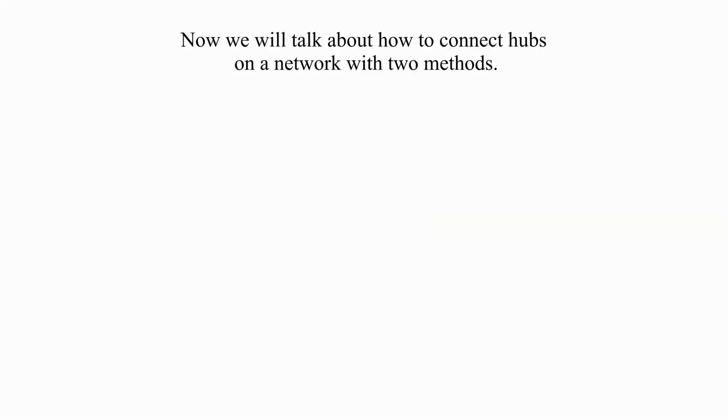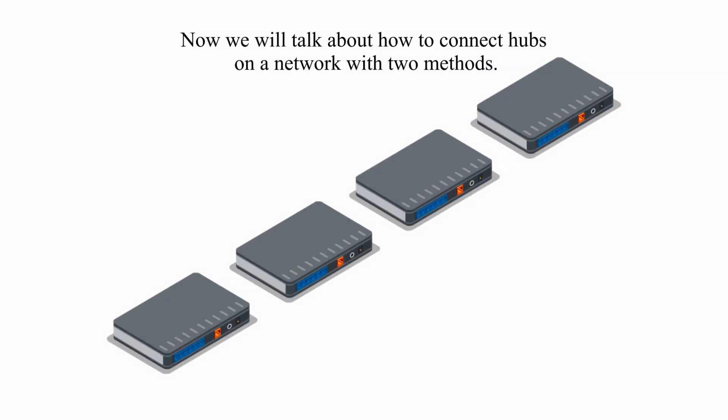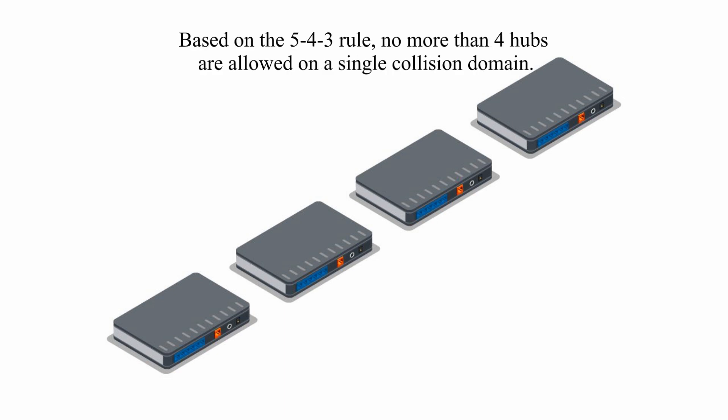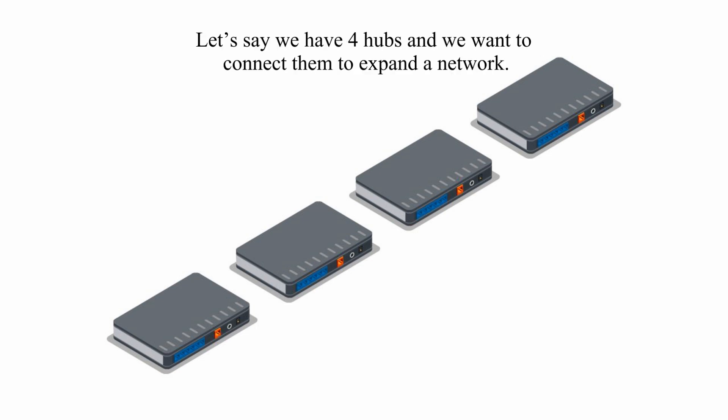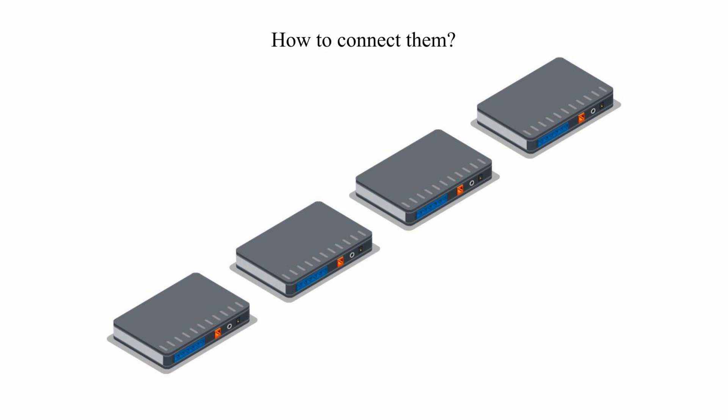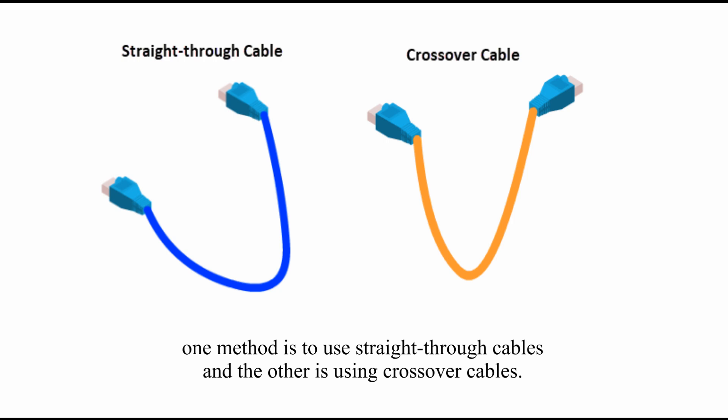Now we will talk about how to connect hubs on a network with two methods. Based on the 5-4-3 rule, no more than four hubs are allowed on a single collision domain. Let's say we have four hubs and we want to connect them to expand a network. There are two methods: one method is to use straight-through cables, and the other is using crossover cables.